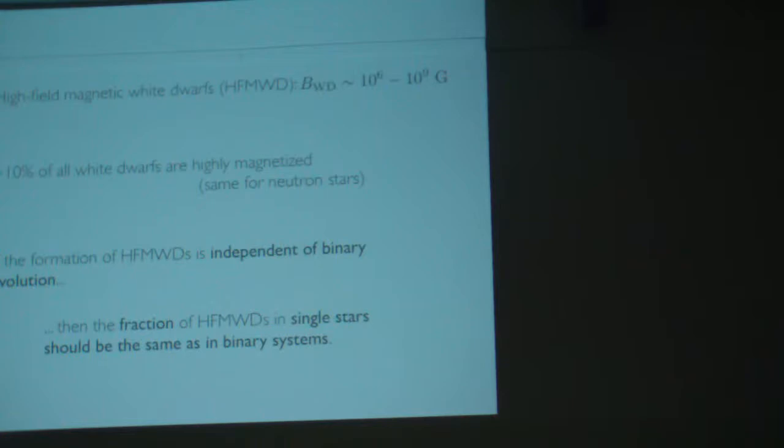So you can ask, where did they come from? If the formation of high-field magnetic white dwarfs is independent of binary evolution, then the fraction of high-field magnetic white dwarfs in single stars should be the same as in binary systems. You can look at the observations to see if this is true or not.